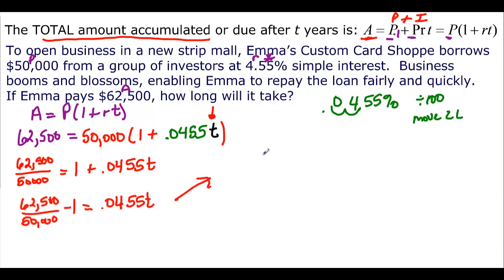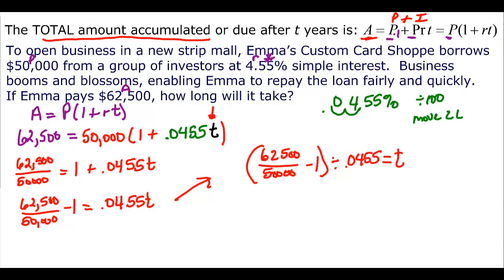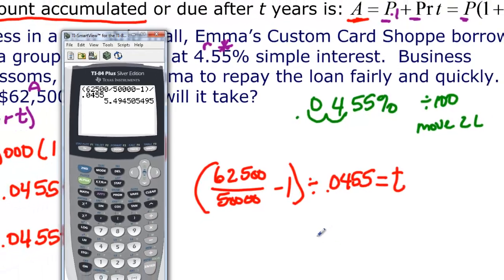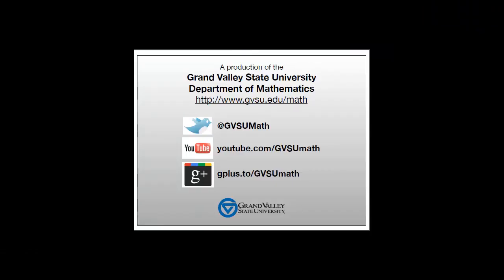Moving to where I have more space, the last step is to compute: 62,500 divided by 50,000, then subtract 1, and divide all of that by 0.0455. In the calculator: open parentheses, 62,500 divided by 50,000, minus 1 — order of operations handles division before subtraction — close parentheses, divided by 0.0455. When I press enter, I find out that it's going to take about five and a half years.